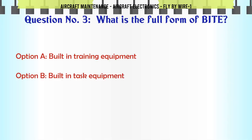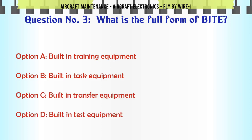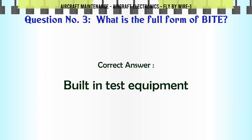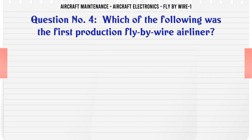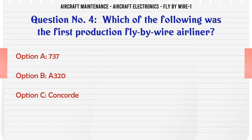What is the full form of BITE? A. Built-in Training Equipment. B. Built-in Task Equipment. C. Built-in Transfer Equipment. D. Built-in Test Equipment. The correct answer is: Built-in Test Equipment.